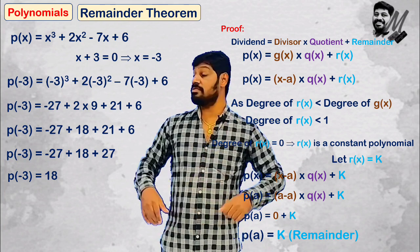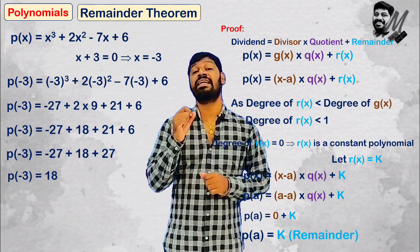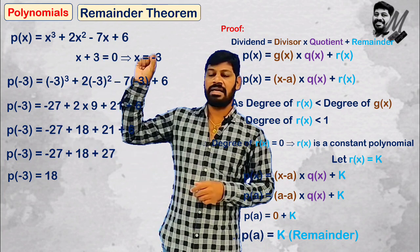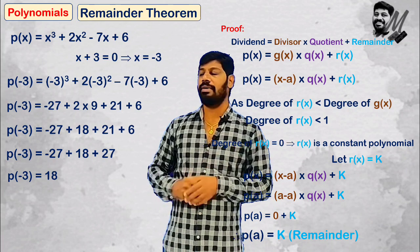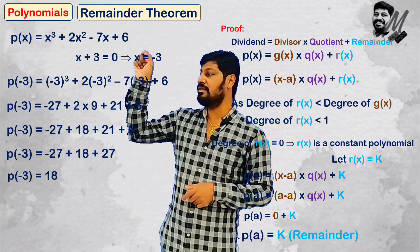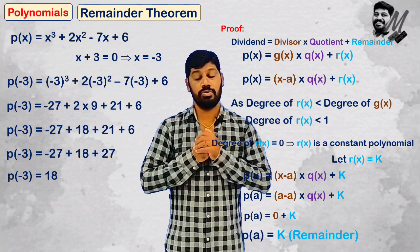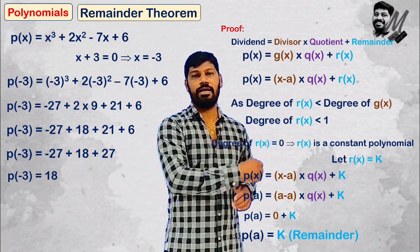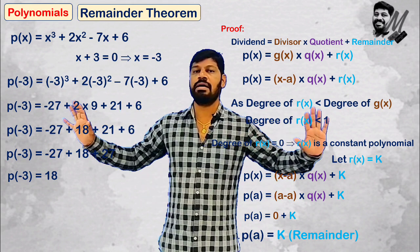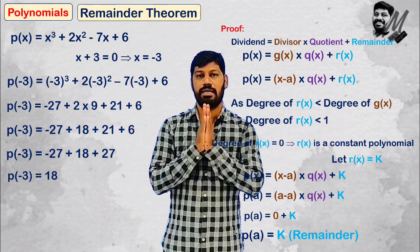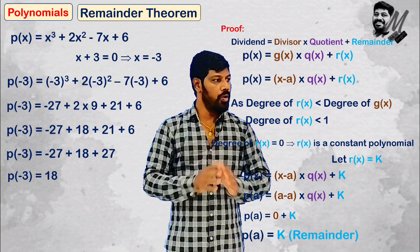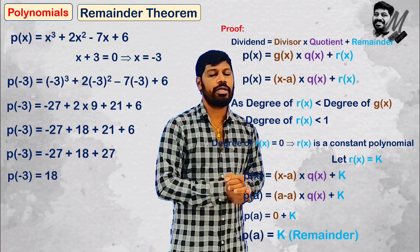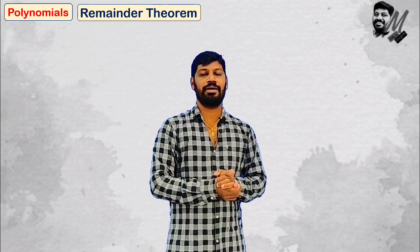Using the Remainder Theorem and using long division, the remainders match. So now onwards, your remainder using Remainder Theorem is equal to remainder from division. This is what the Remainder Theorem tells us.